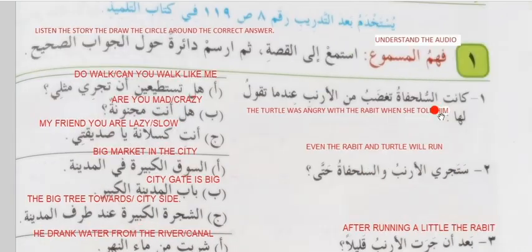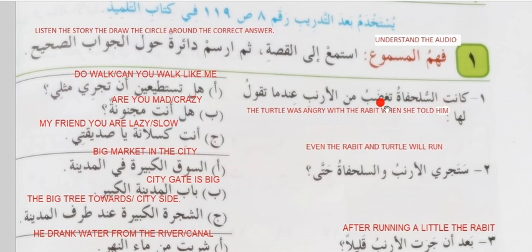So there are some questions. Because you are having audio — I don't have the audio. But after understanding the translation, I hope you can do it by yourself. Kanat sulfaha taghzabu min al-arnabi indama taqool laha. Kanat means was. Sulfaha, the female turtle — this is a feminine noun. Taghzabu — ghaz means angry, ta is used because of the feminine noun. Min means from. Arnab means rabbit. Indama means when. Taqool — she said laha, to him. So the turtle was angry with the rabbit when she told him.